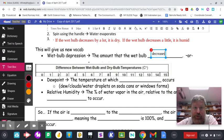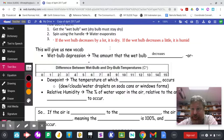Another way to say wet bulb depression is this sentence right here. Difference between wet bulb and dry bulb temperatures. That is wet bulb depression. It's how much it went down by.